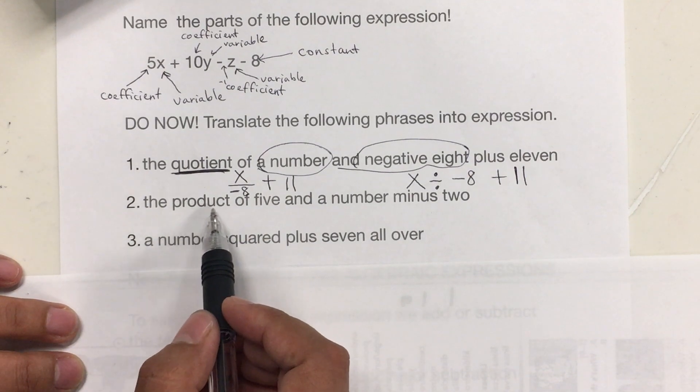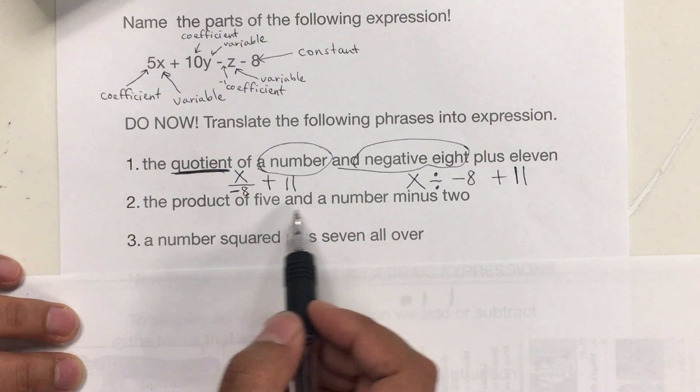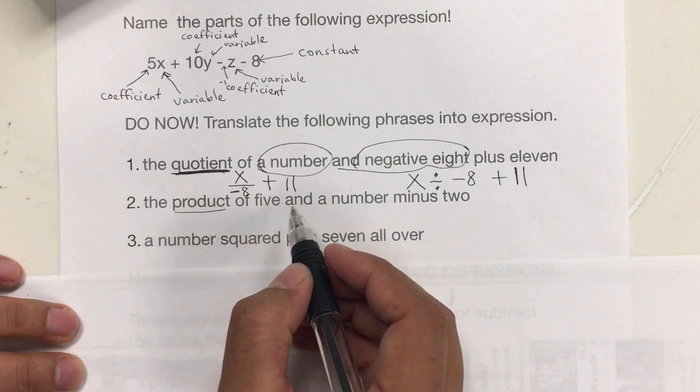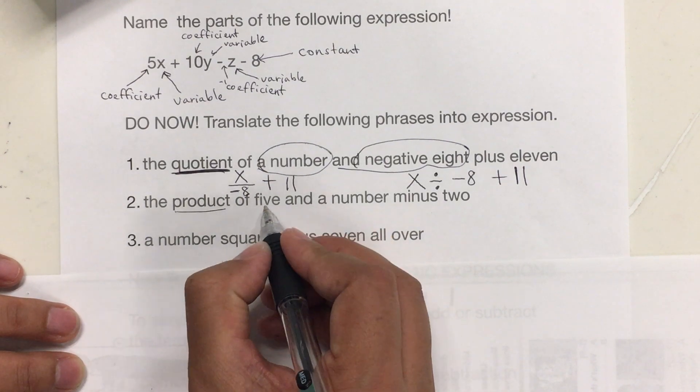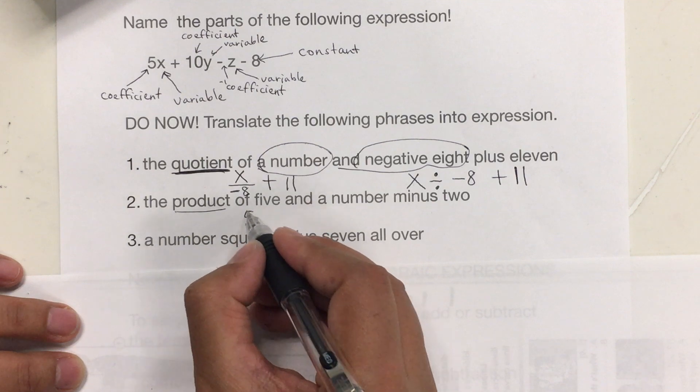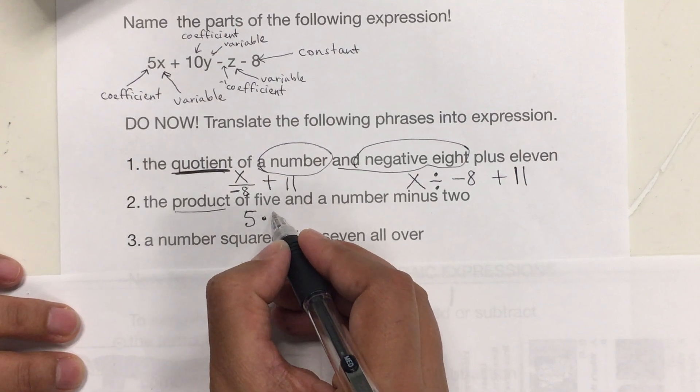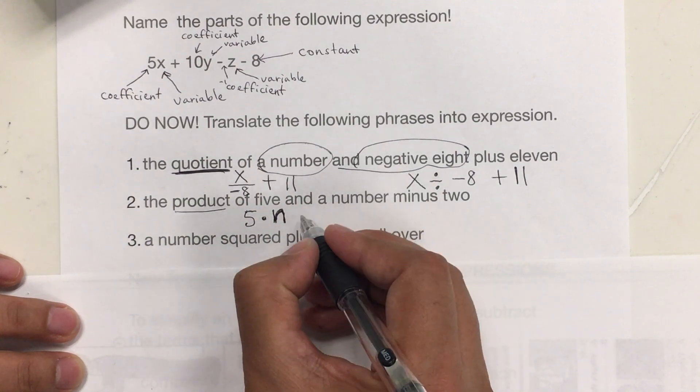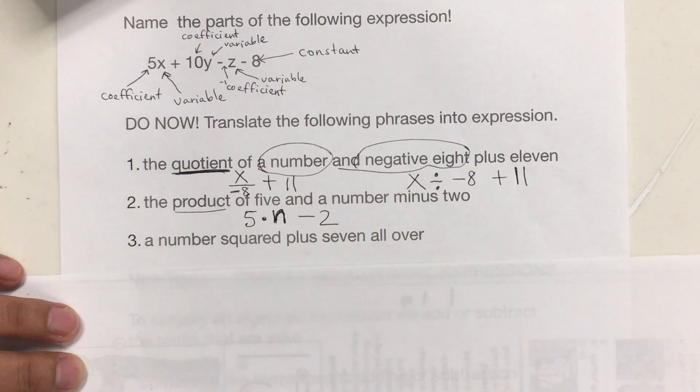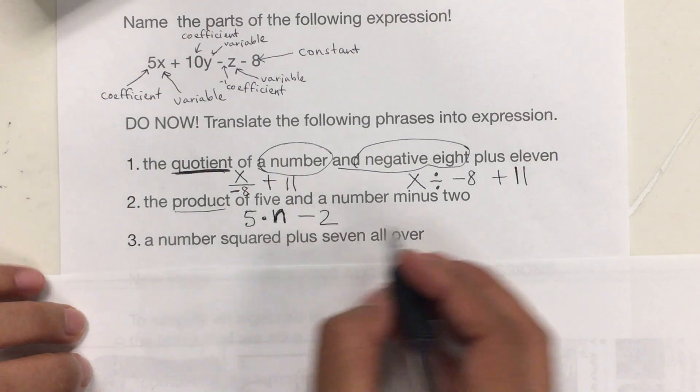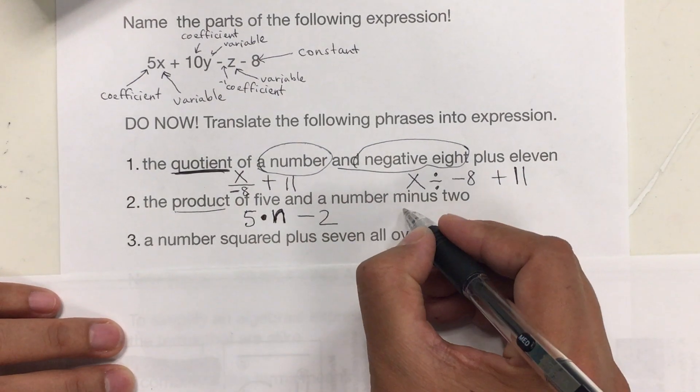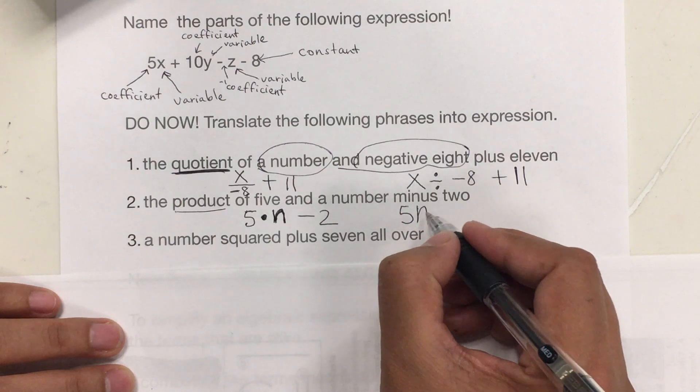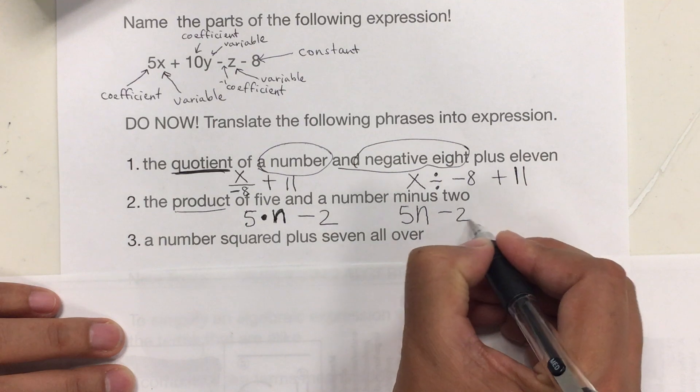The next one says, the product of 5 and a number minus 2. So, the product means multiplication of 5 and a number. So, 5 times a number. We don't know what the number is. So, we can put any variable. Minus 2. So, something like that. You can just put 5n or 5x or 5p, any variable, minus 2.